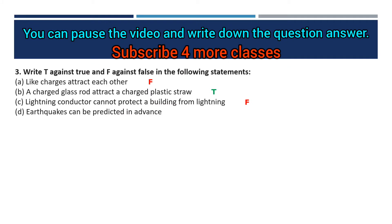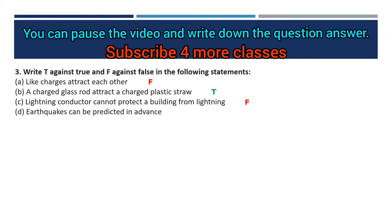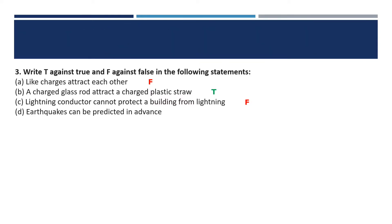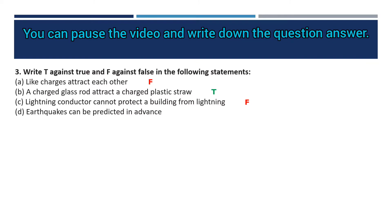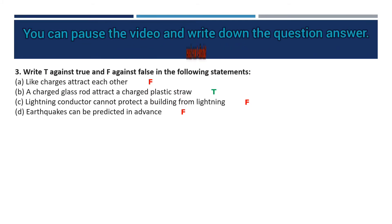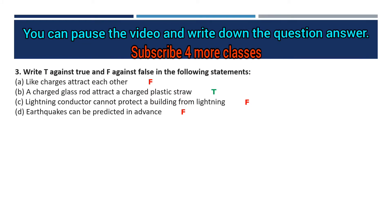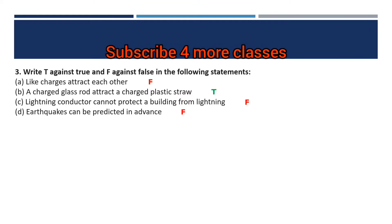'A lightning conductor cannot protect a building from lightning' — this is totally false, because a lightning conductor is installed in buildings for their safety; it does protect a building from lightning. 'Earthquakes can be predicted in advance' — this is totally false; earthquakes cannot be predicted in advance.